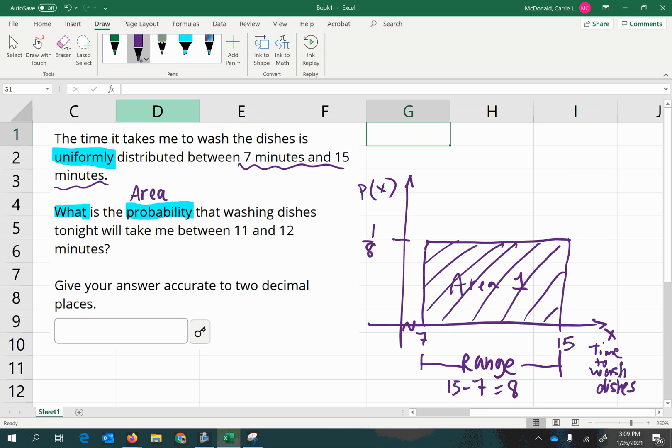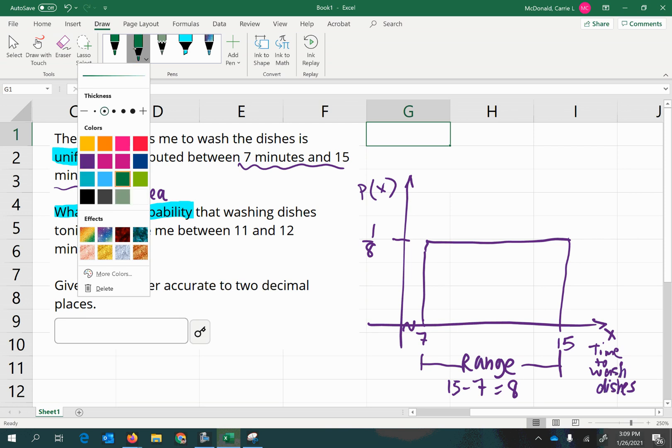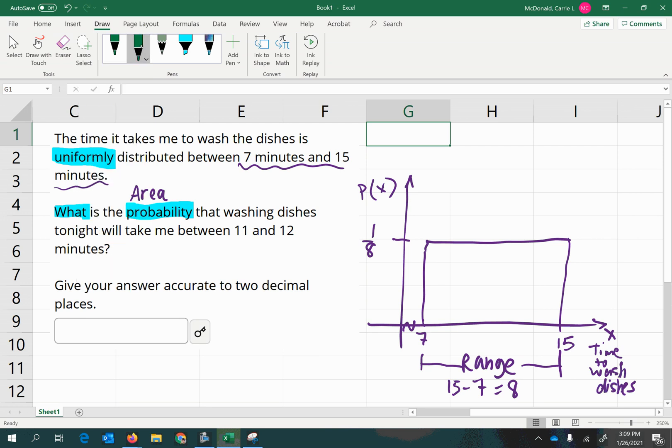Now, once I have that sketched out, I can get rid of the shading because I'm not really interested in the area of the entire large rectangle. I'm interested in the area of a smaller part of the rectangle. And that is down here because it says, what is the probability that washing dishes tonight will take me between 11 and 12 minutes. So I'm just going to sketch in 11 and 12.